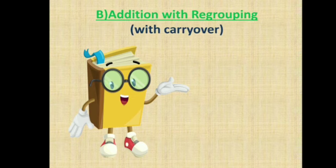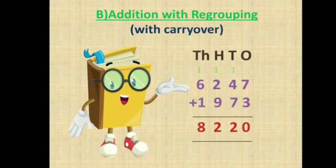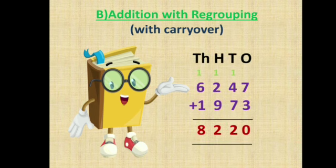Then addition with regrouping, which means with carryover. Here, for example, the numbers are 6247 and 1973.